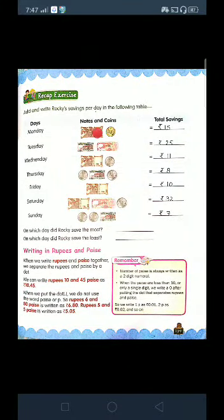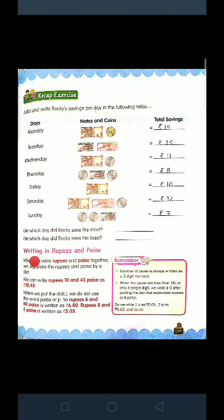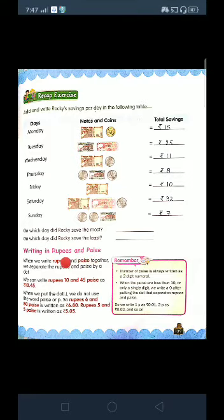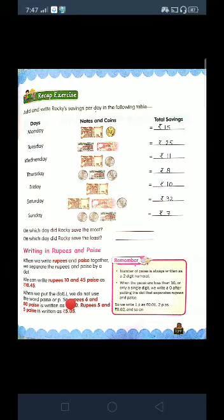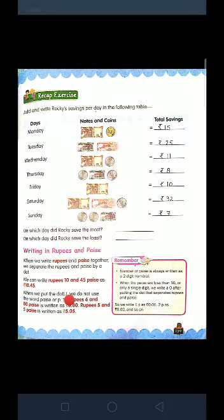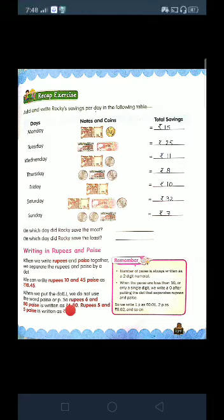Next is about rupees and paise. Money can be measured in two units: rupees and paise. While writing rupees and paise together, we separate the digits with the help of a dot. Without the dot, meaning in the form of words, it can be written as follows.